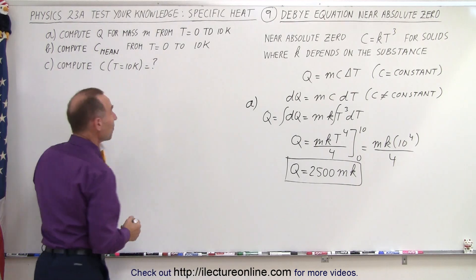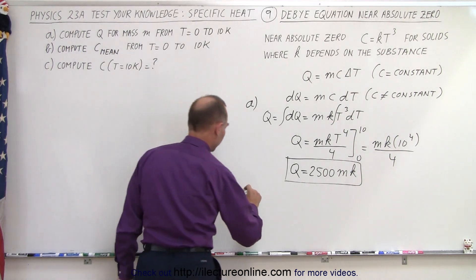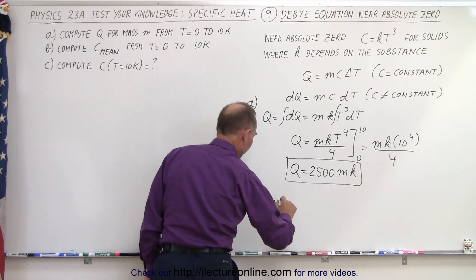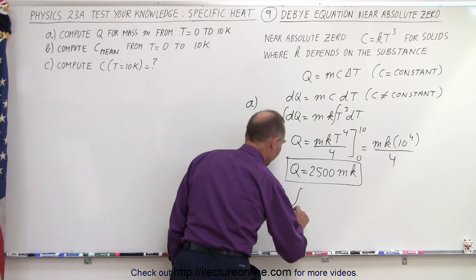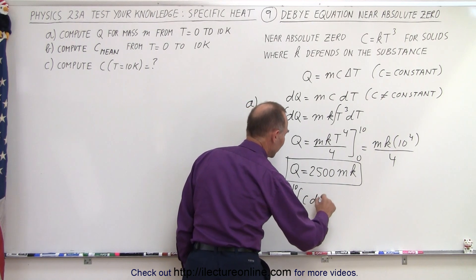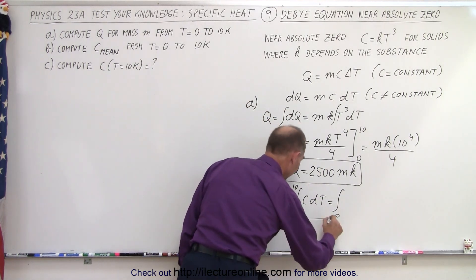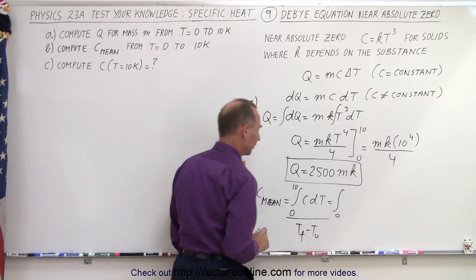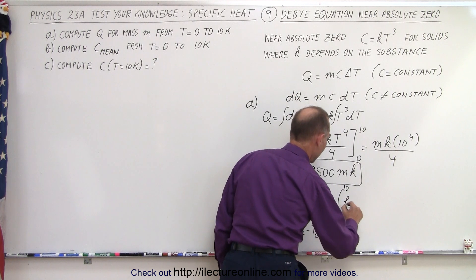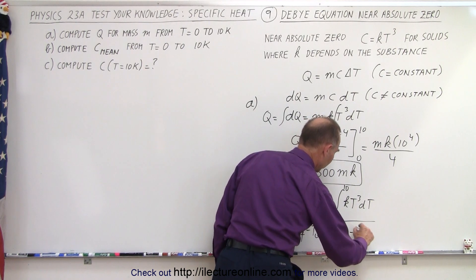Now for Part B, what is the mean specific heat? C mean, the average specific heat, is going to be the integral from 0 to 10 of C times DT, divided by T final minus T initial — the range of the temperatures. So from 0 to 10, C is K times T cubed DT, divided by 10 minus 0.